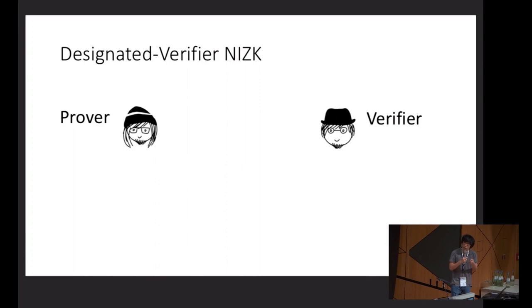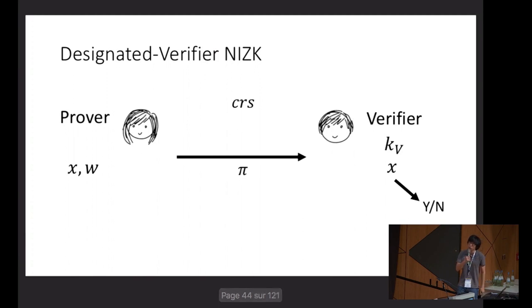Just to take a step back, we have a prover and verifier. Somebody's approaching, so they removed their hat and shape, that's how they're looking now. And pretty much, there's a CRS in the sky. Given this CRS, the prover, using a witness for a statement, can send a proof to the verifier. Then the verifier, using some special verification key, can decide to accept or reject the proof.